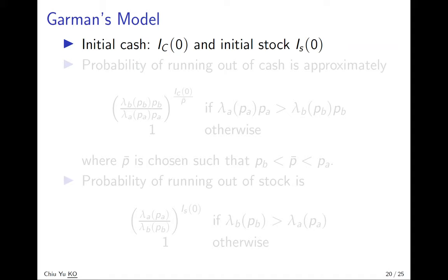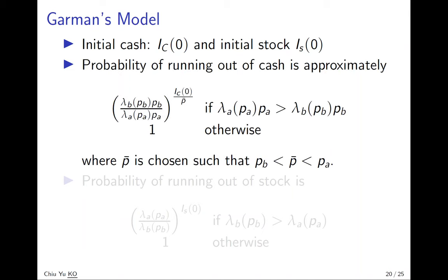Using the property ruin, we know the probability of running out of cache is approximately Q over P. Remember, this is the cache run out, this is cache running in. Lambda P B is the cache running out, lambda A times P A is cache running in.